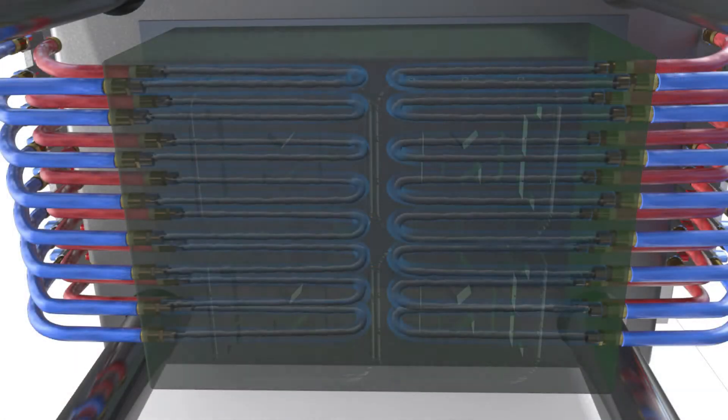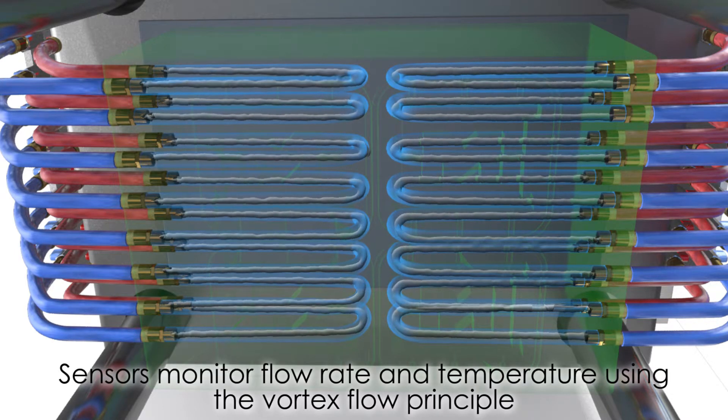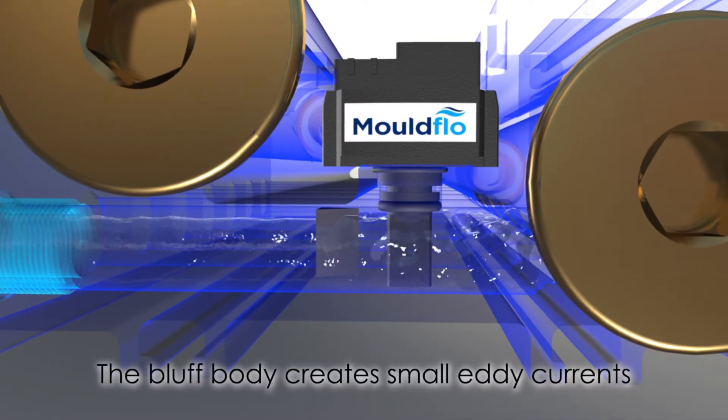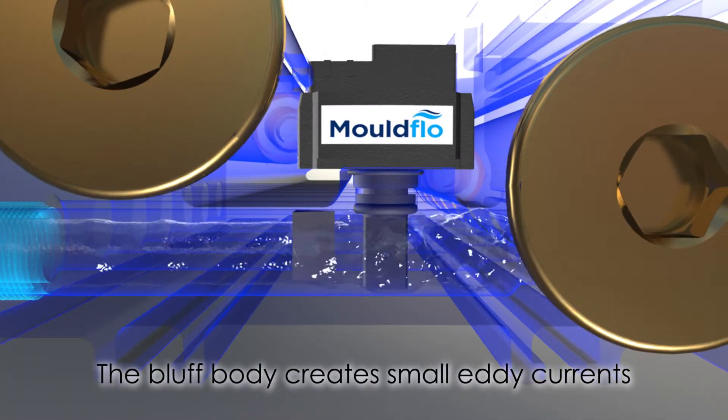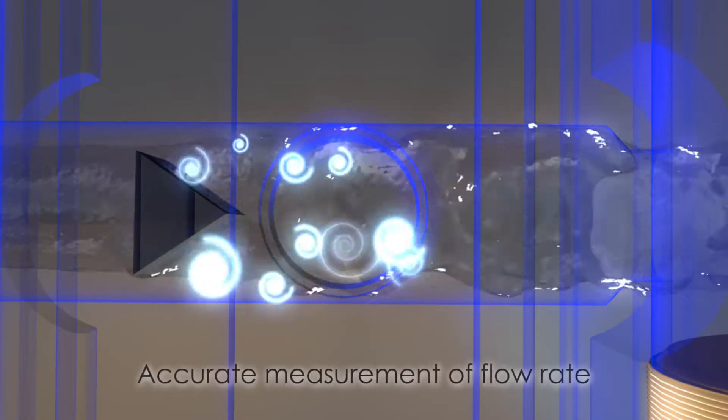As the water flows through the system, the sensors continually monitor flow rate and temperature. The compact sensor uses the vortex flow principle. The bluff body creates small eddy currents, and by measuring the pressure within these vortices, we can accurately measure the flow rate.